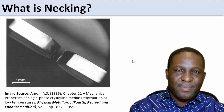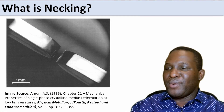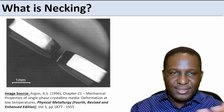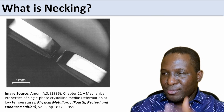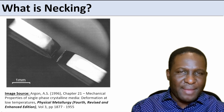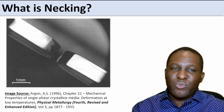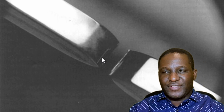Here is a good example of a necking specimen, picked up from a publication by Argon — quite a famous figure in the field — published in 1996. This material is a single-phase crystalline metallic material, and what you see right away is necking: a reduction in cross-sectional area and eventual fracture. The question is why does this happen, and can we trigger this numerically?